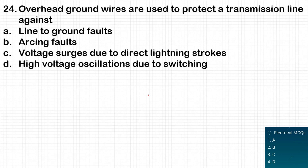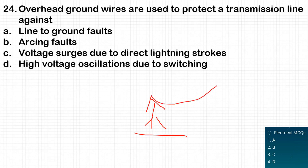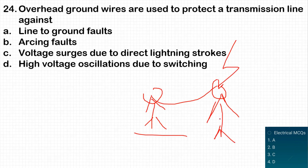The next question: overhead ground wires are used to protect a transmission line against what? Overhead ground wires are connected at the top of transmission towers. As shown here, if this is the tower structure, the line drawn at the top represents the overhead ground wire. When lightning strikes, it bypasses the lightning stroke to the ground and protects the transmission line. So option C — voltage surges due to direct lightning strokes — is the correct answer.